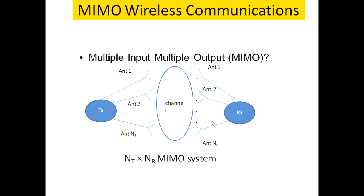Whatever number of signals are captured by the NR antennas, they take multiple propagation paths and are received by the receiver for processing. In total, a MIMO system has NT × NR antennas, where NT is the number of transmitter antennas and NR is the number of receiver antennas.